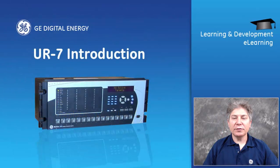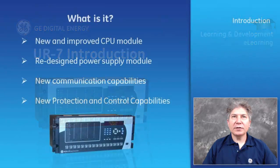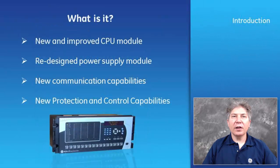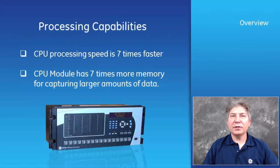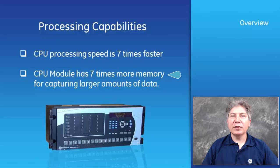Introduction to the UR Version 7. What is it? It consists of the following: a new and improved CPU module, a redesigned power supply module, new communication capabilities, and new protection and control capabilities. The CPU processing speed is 7 times faster, and the CPU module has 7 times more memory for capturing larger amounts of data.